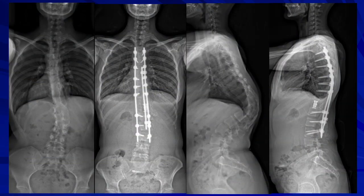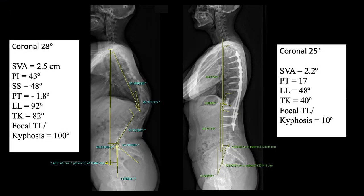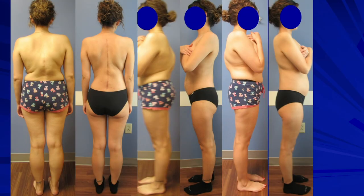This radiograph shows the correction of the thoracolumbar kyphosis. There is a small residual coronal deformity in the lumbar spine, but there is significant improvement of the thoracolumbar kyphosis. This photograph shows the clinical improvement of the thoracolumbar kyphosis in the patient.